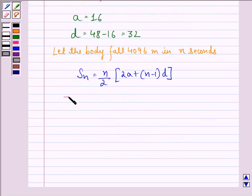This implies 4096 is equal to N by 2 into 2 into 16 plus N minus 1 into 32.